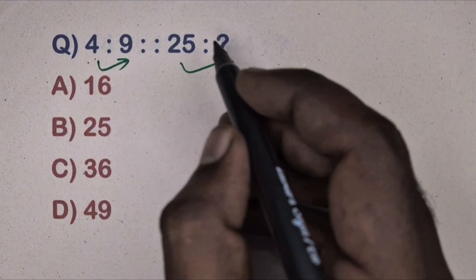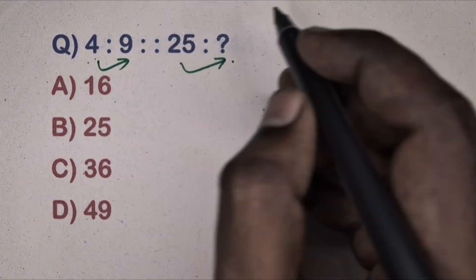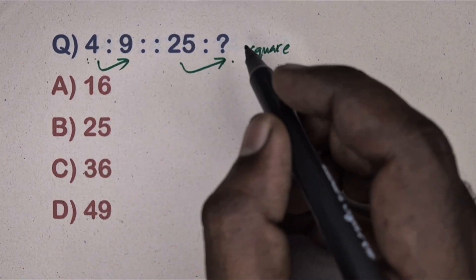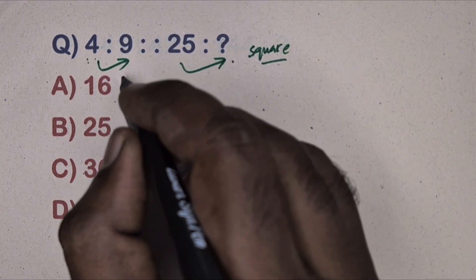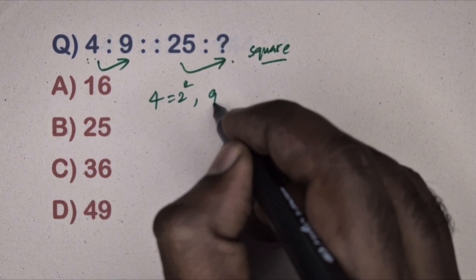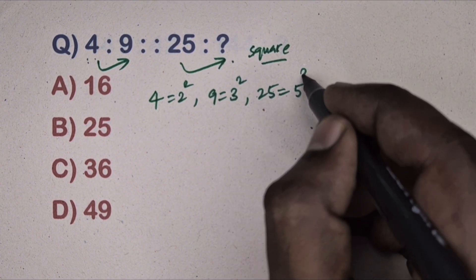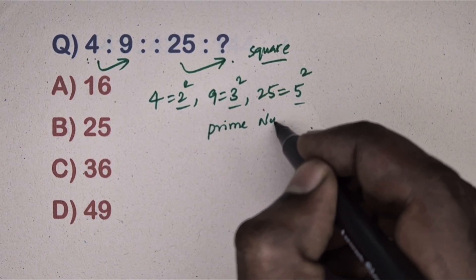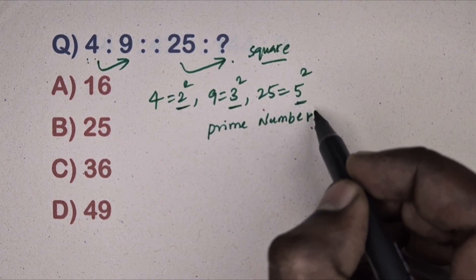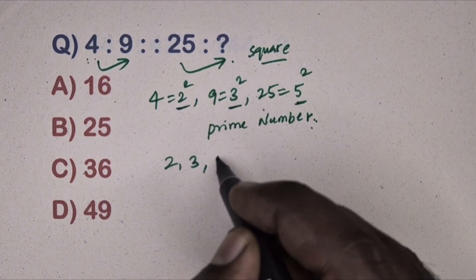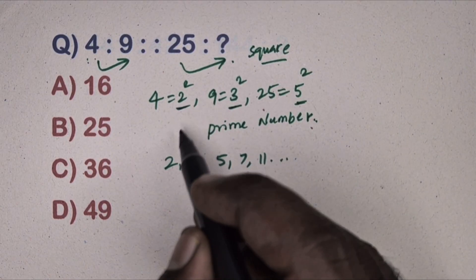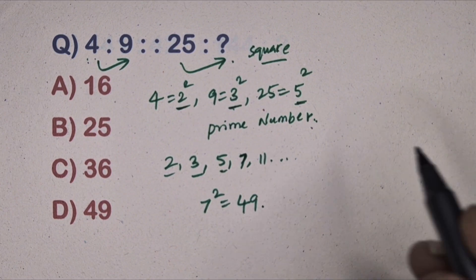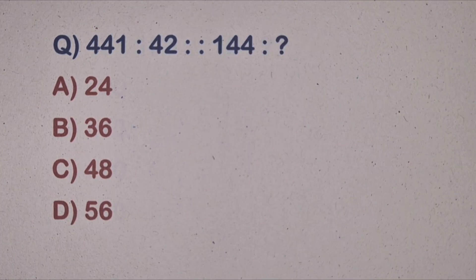Next question: 4 is related to 9, 25 is related to which number? This is the square relation. The numbers 4, 9, 25 are squares of 2, 3, 5, which are consecutive prime numbers. Write prime numbers: 2, 3, 5, 7, 11... The next prime after 5 is 7, so 7² = 49. Option D is the correct answer.